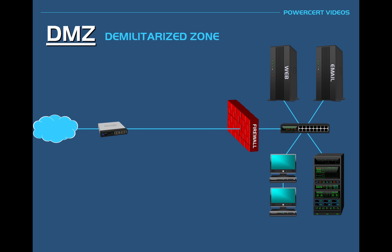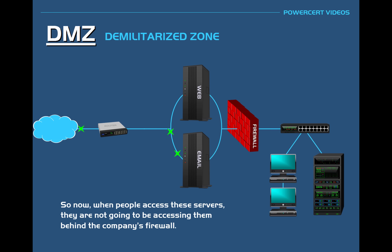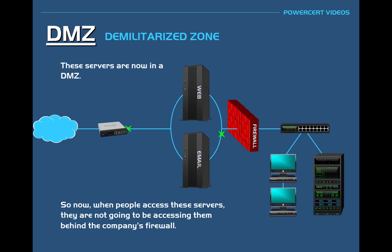But what if the company put the publicly accessed web and email servers outside the company's internal network, on the opposite side of the firewall? The servers would still be in the same building, but on the other side of the firewall. Now when people access these servers from the internet, they are not accessing them behind the company's internal firewall where sensitive data is kept — the servers are out in front, facing the internet and fully exposed. This is exactly what a DMZ is; these servers are now in a DMZ, also known as a perimeter network.